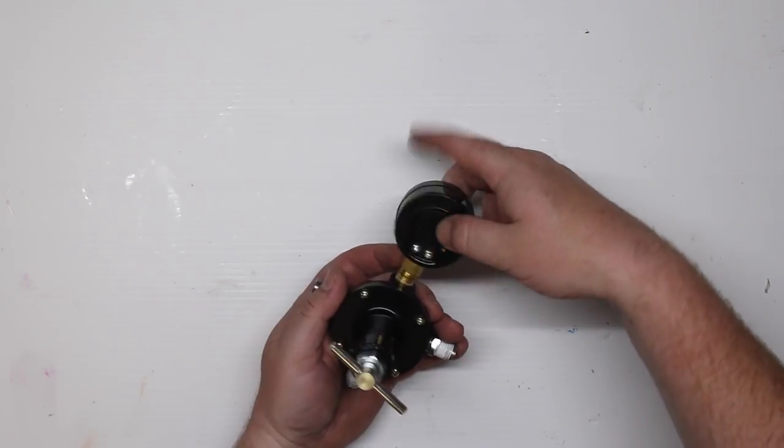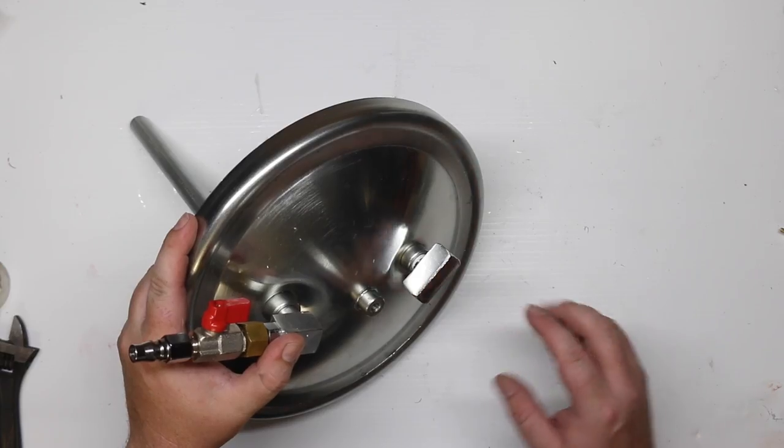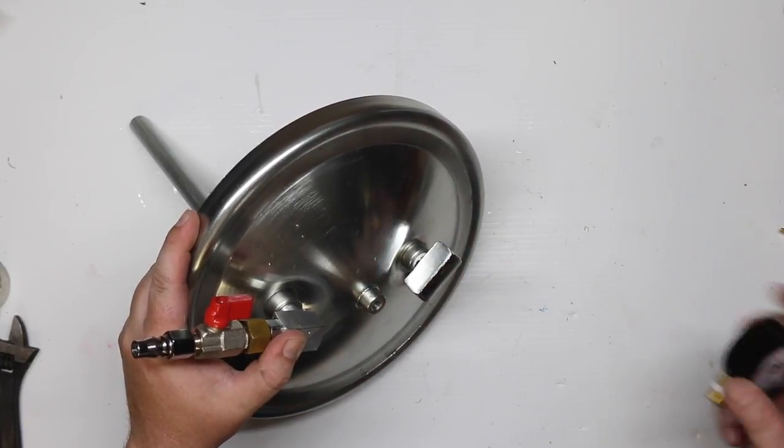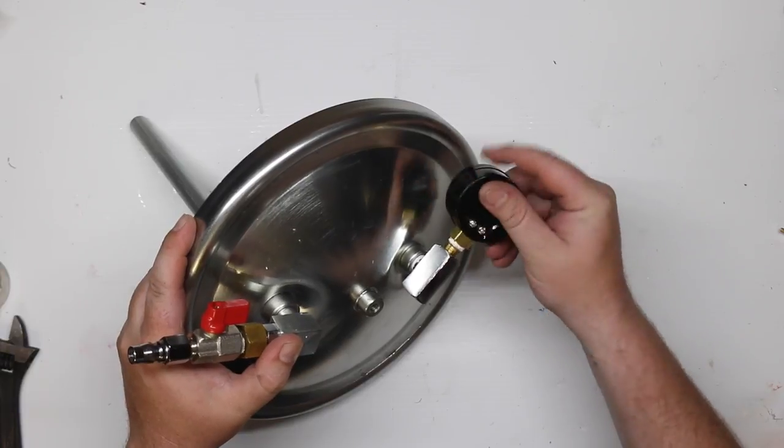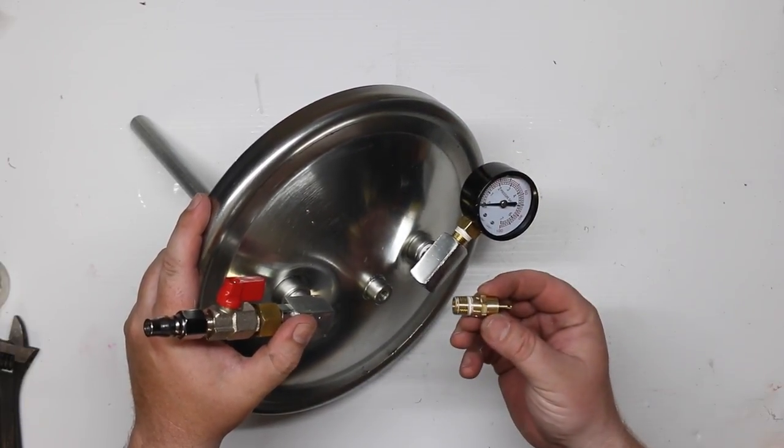On your regulator, just unscrew your pressure gauge and take off your safety relief valve. So now that you've taken the regulator off, you're just left with this T adapter in here. So on one side you want to put your pressure gauge, and on the other side put your pressure relief valve.